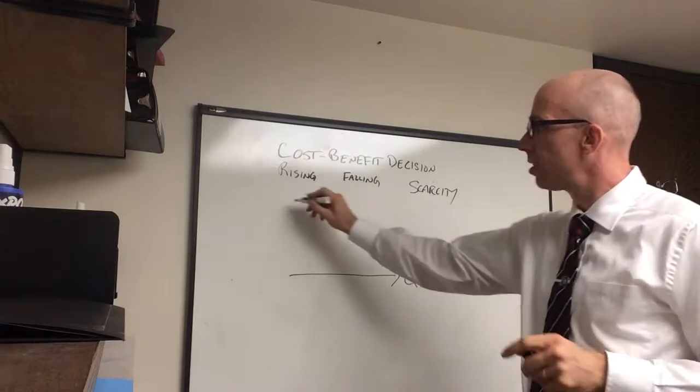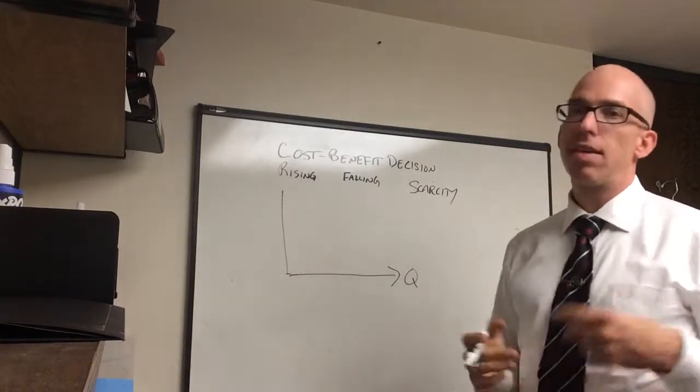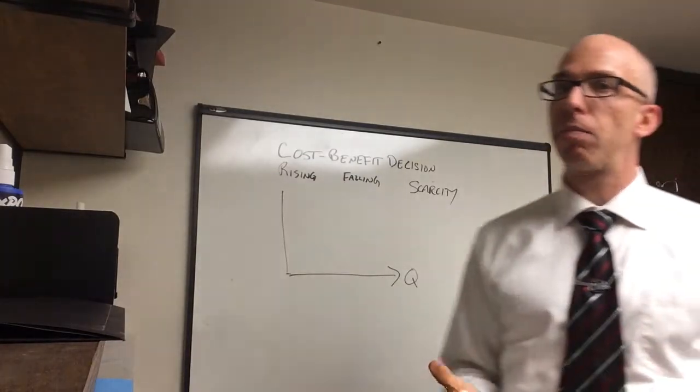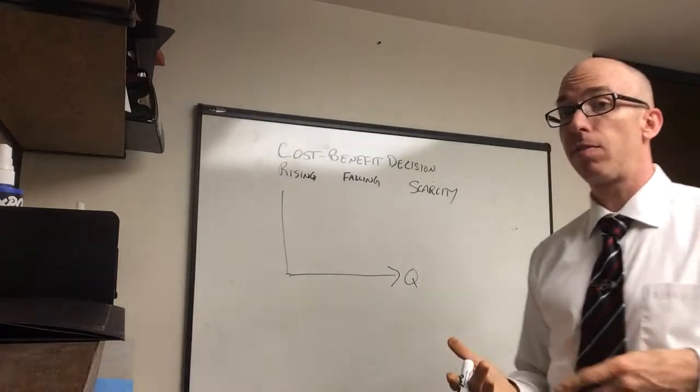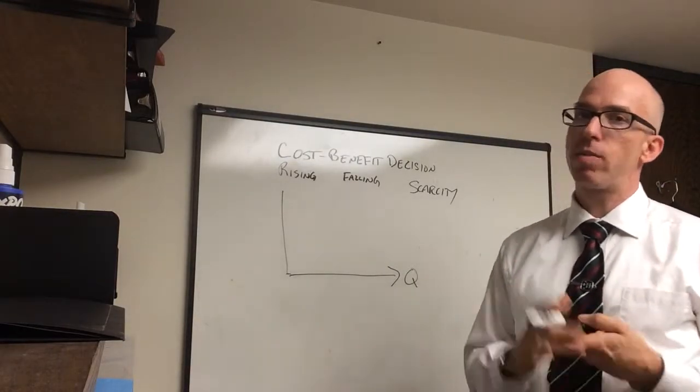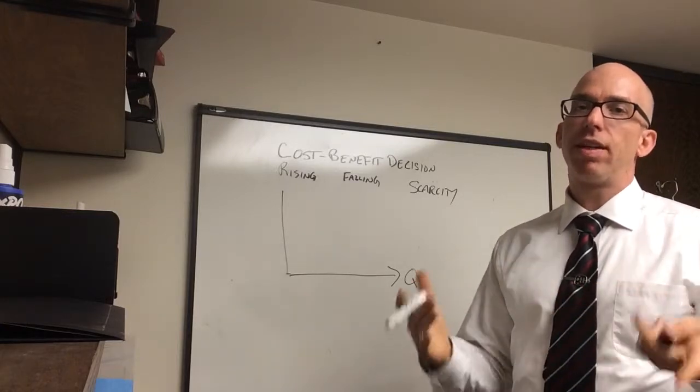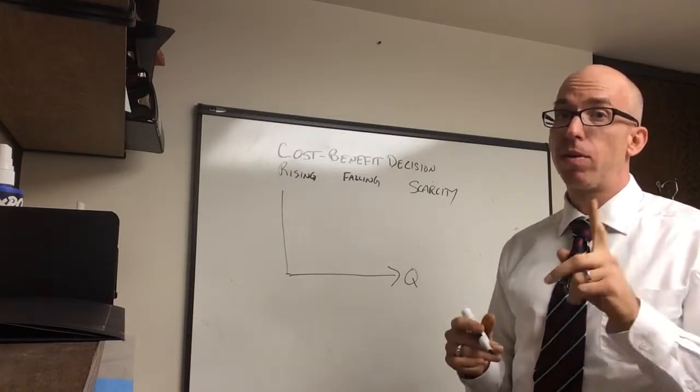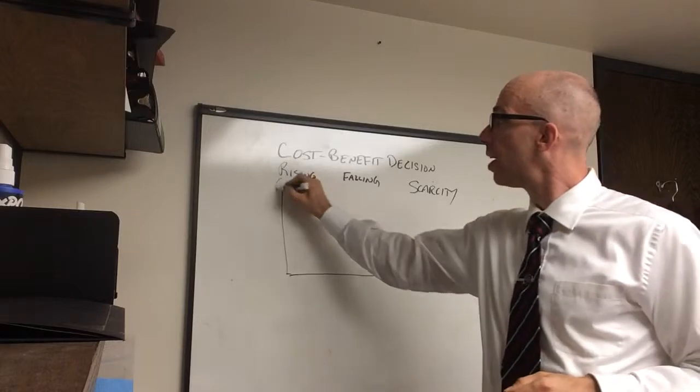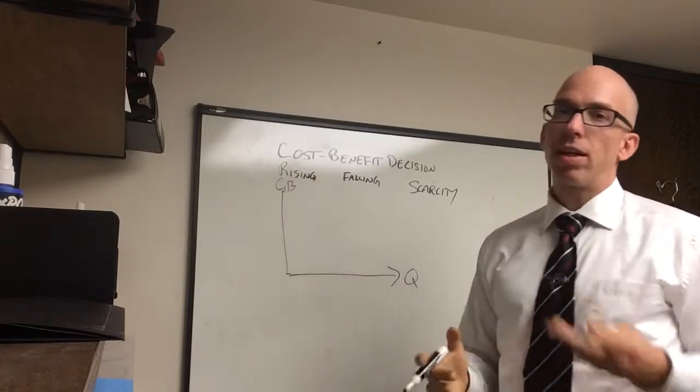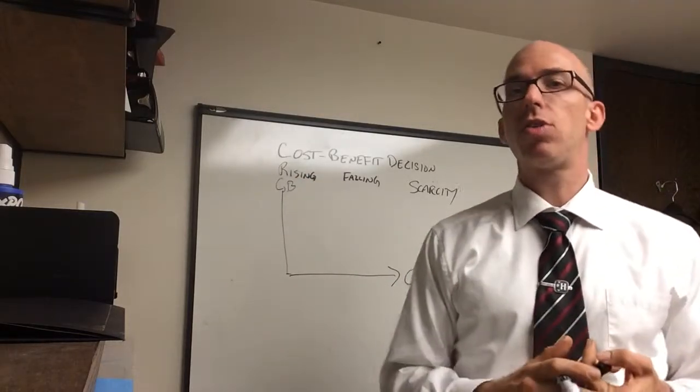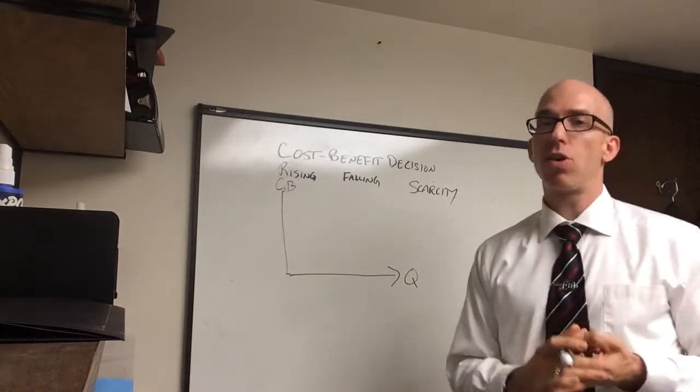Now, the vertical axis is going to be some measure. And if you've seen supply and demand before, you would know it was price. But here it's going to be just something you're giving up. It doesn't have to be dollars. It is a cost and a benefit, something given up or something gotten. So I'm going to put C, B. And what we're going to have is two lines, one showing marginal cost and one showing marginal benefit.